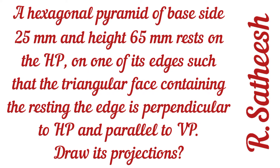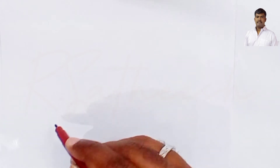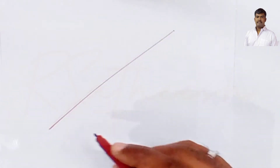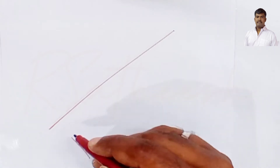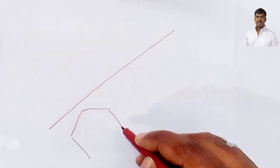Hi students, welcome. We are discussing how to draw the hexagonal pyramid as per our problem. The problem is: hexagonal pyramid of base side 25 mm and height 65 mm, resting on the HP on one of its edges such that the triangular face containing the resting edge is perpendicular to HP and parallel to VP. Draw its projections. First, draw a reference XY line.